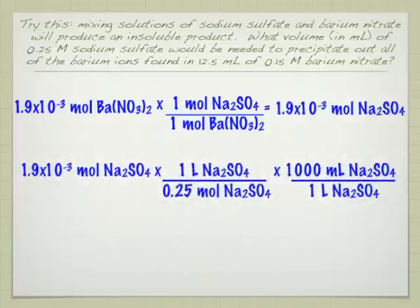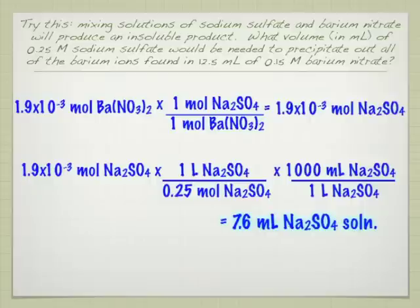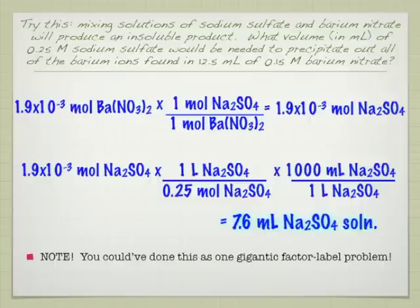Finally, it's asking for a volume. So I'm going to use the concentration I was given for sodium sulfate, so moles goes on the bottom, I'll have liters. And since they asked for it in milliliters, then I will go back out to milliliters there using a thousand milliliters in a liter. And that's it. So I will actually need 7.6 milliliters of sodium sulfate solution to react completely with 12.5 milliliters of 0.15 molar barium nitrate.